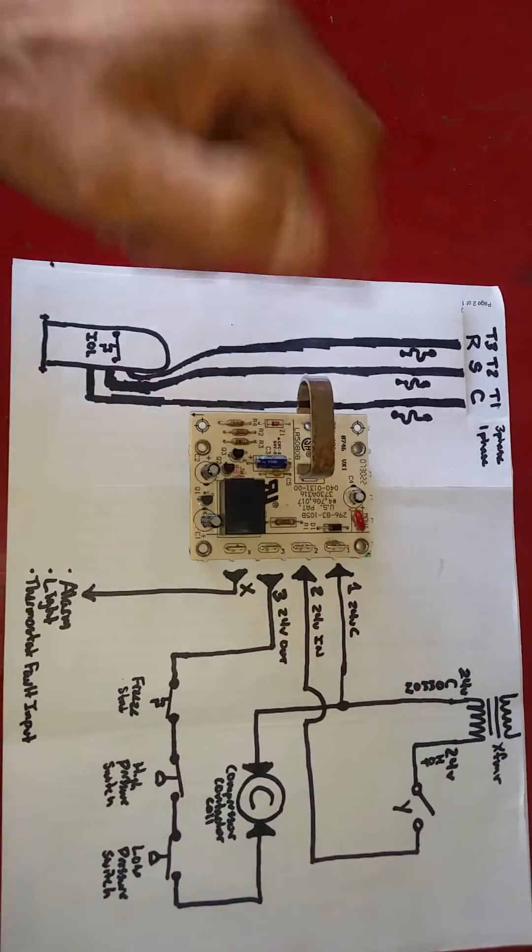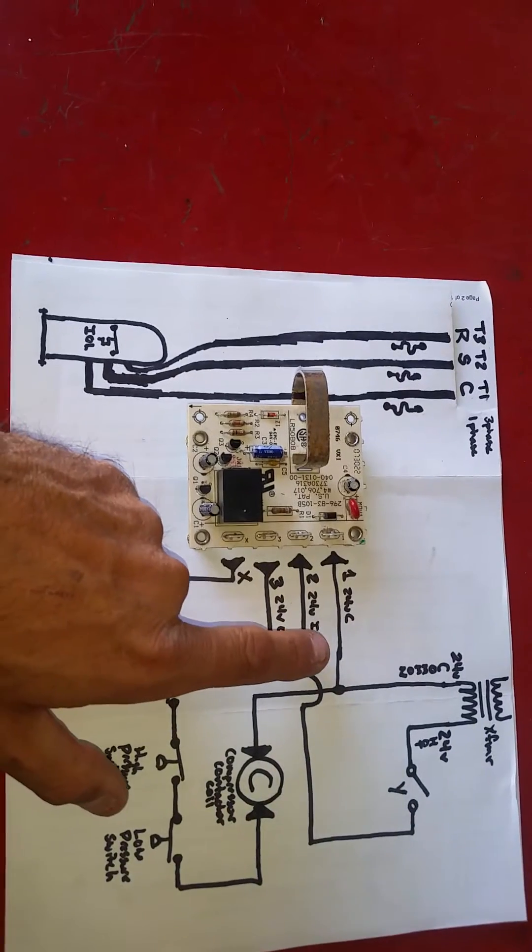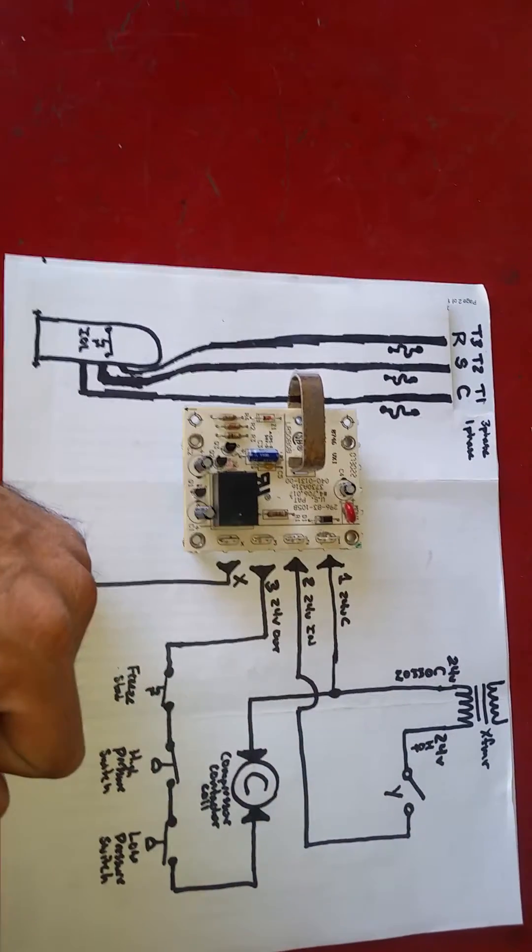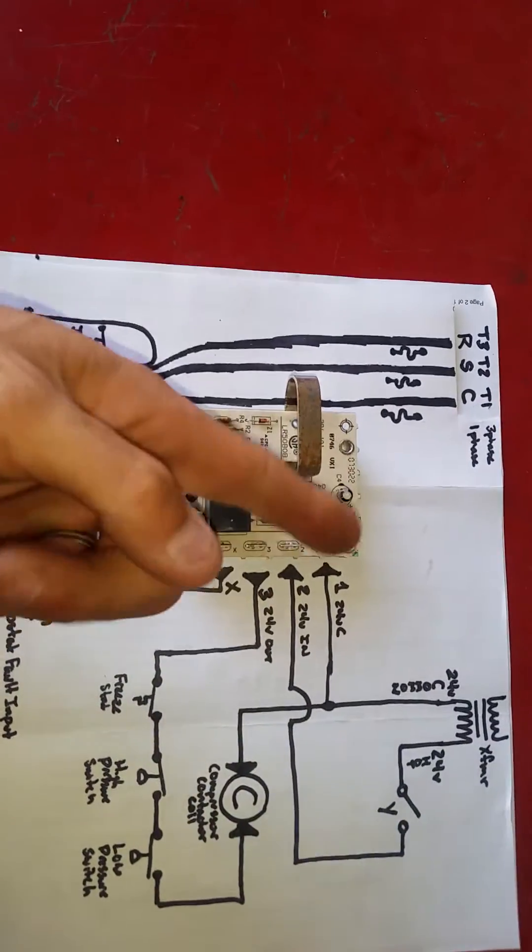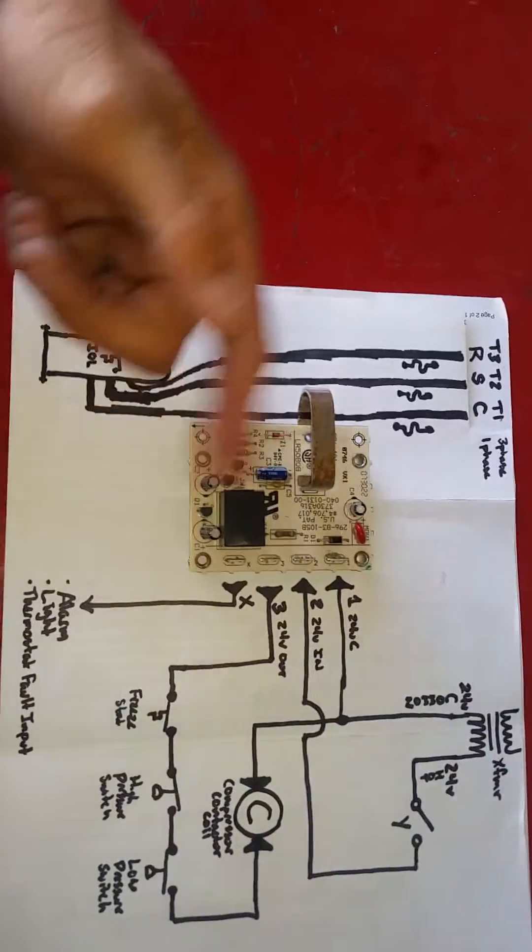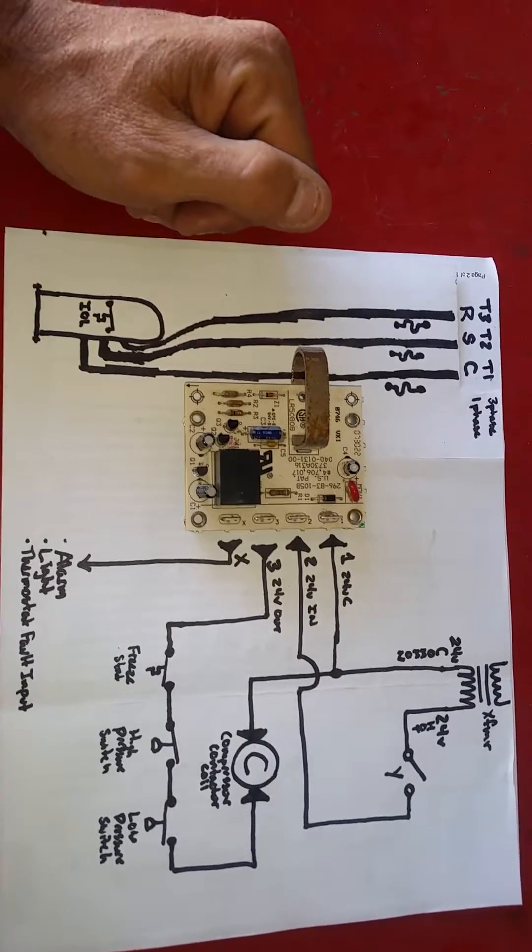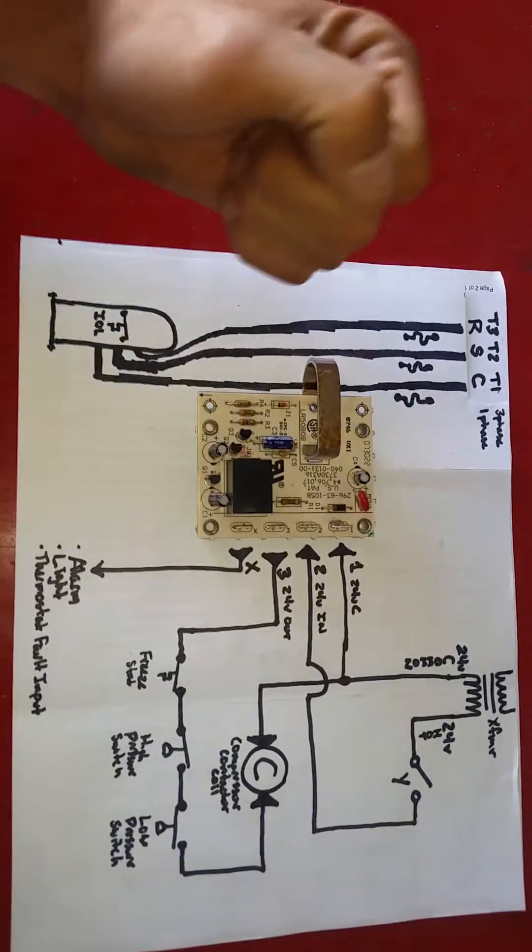And it will not reset until we discontinue 24 volts to our number two terminal. And by depowering or de-energizing number two and re-energizing it, it will reset the circuit to re-attempt another try at running. Thus, it's just a solid lockout device.